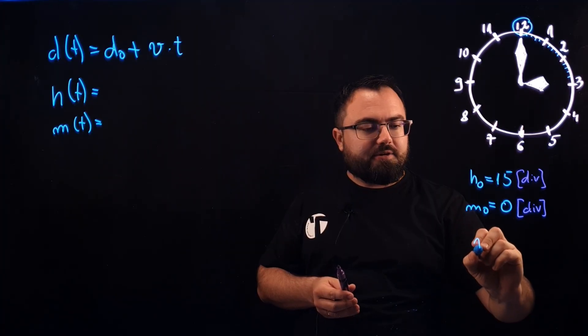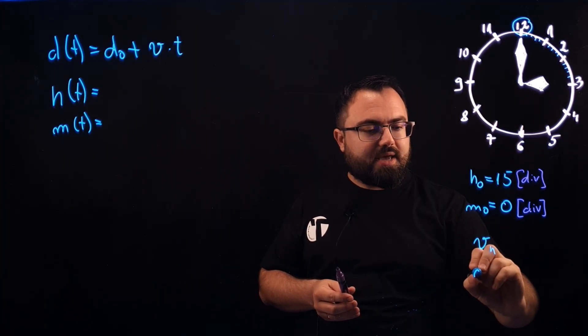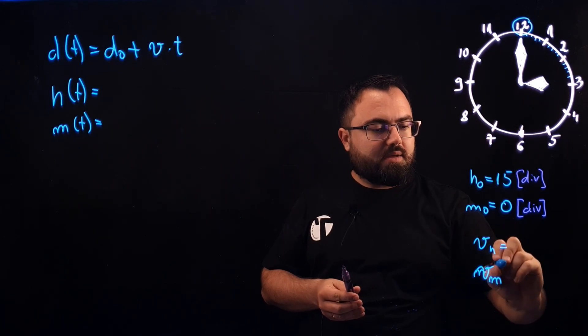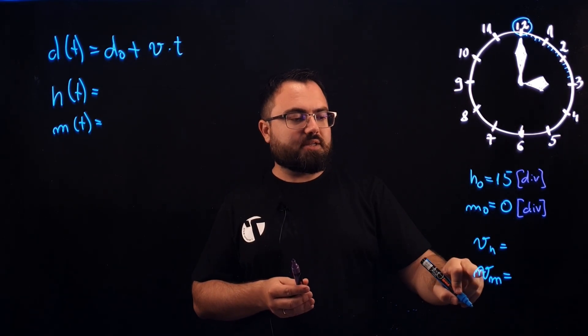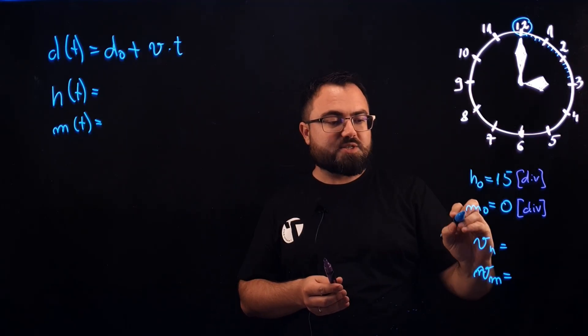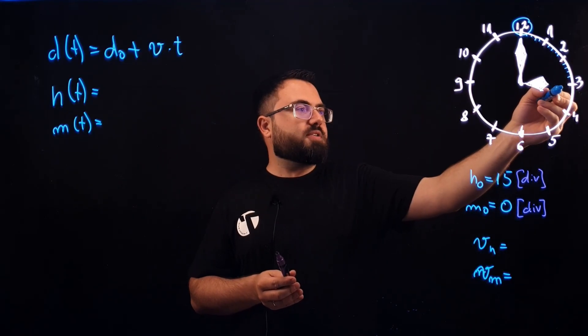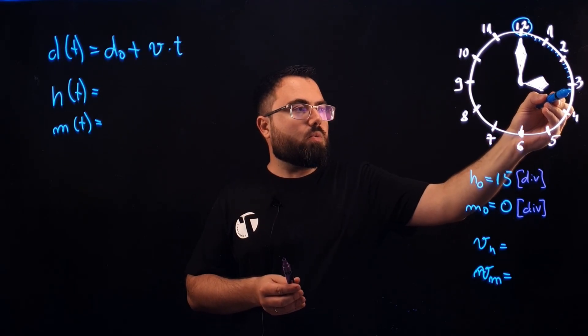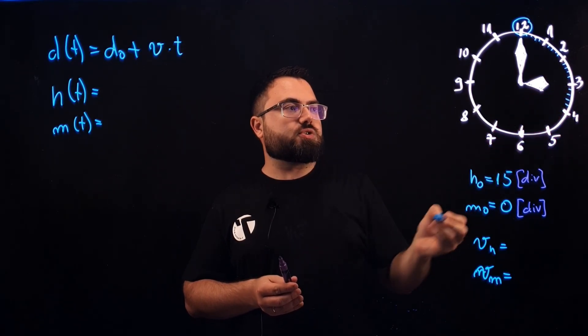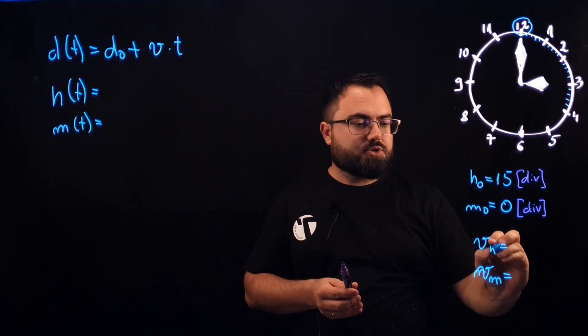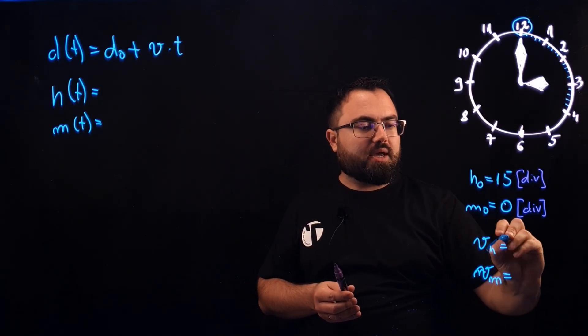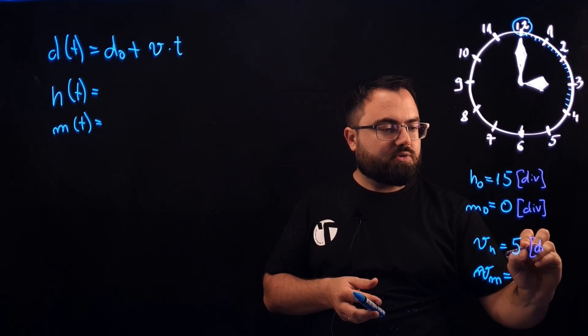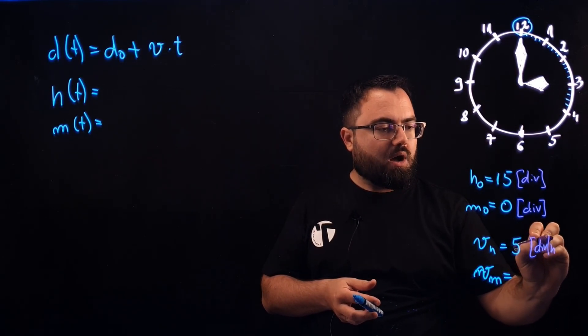Now we need to look at vh and vm. This is the speed of the hour hand and this is the speed of the minute hand. The speed of the hour hand, let's try to see how we can easily find out what it is. It makes five divisions in one hour. So the speed of the hour hand is 5, and the unit here is division per hour.